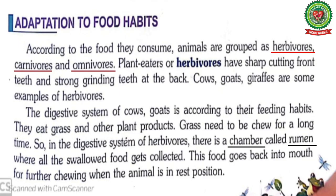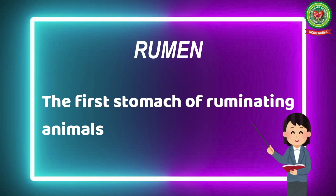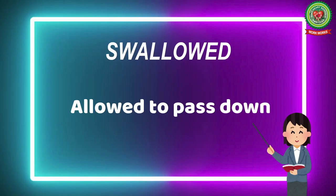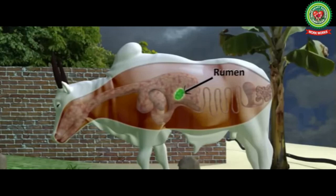Underline the word chamber and write down its meaning: compartment. Underline the word rumen and write down its meaning: the first stomach of ruminating animals. Underline the word swallowed and write down its meaning: allowed to pass down.